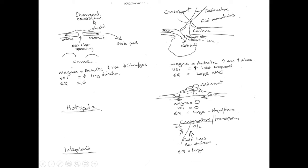We have the divergent — plates moving apart — the convergent — plates moving together — the collision or convergent collision where plates again move together, and the conservative where they're sliding past each other, either at different speeds in a similar direction or in different directions. Drawing diagrams is such an easy way of showing this using the dual coding technique, giving all the key information about each of the different plate types.